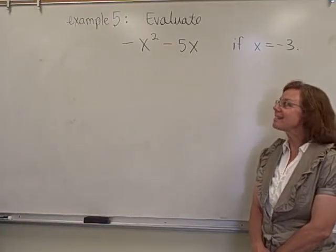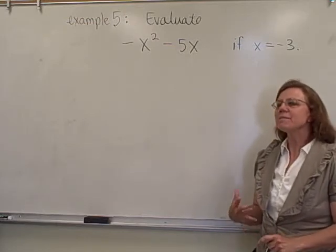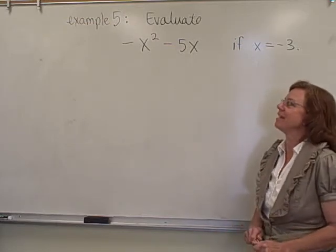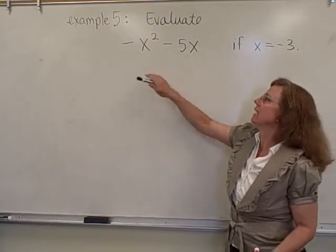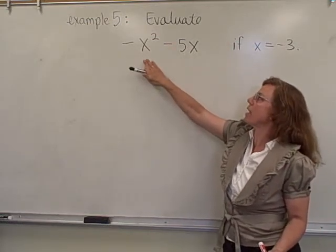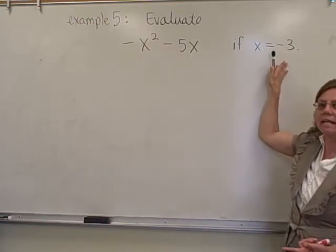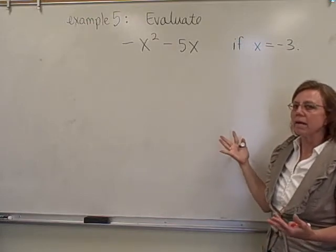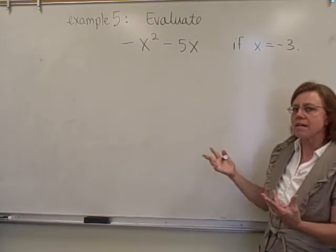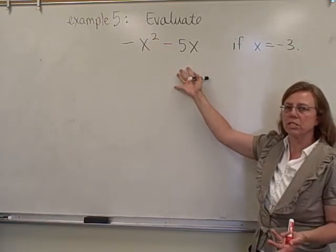For our last example on order of operations, the instructions this time are a little bit different, and it's always important to read your instructions carefully. So this time we want to evaluate this expression, the opposite of x squared minus 5 times x, if x is negative 3. Because x is a variable, and so in algebra if you have a variable, it could vary, it could change, and so this time x is negative 3.